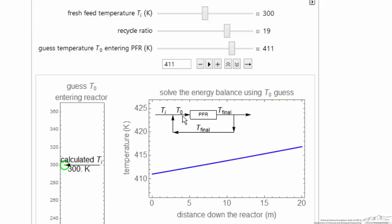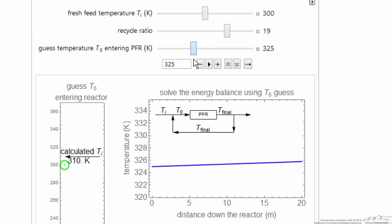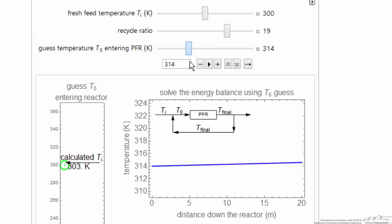But the question is, is there another temperature? If I start lowering this, I'm getting further away, but now I'm starting to get closer, and it looks like indeed there's another solution at 310 for T0.